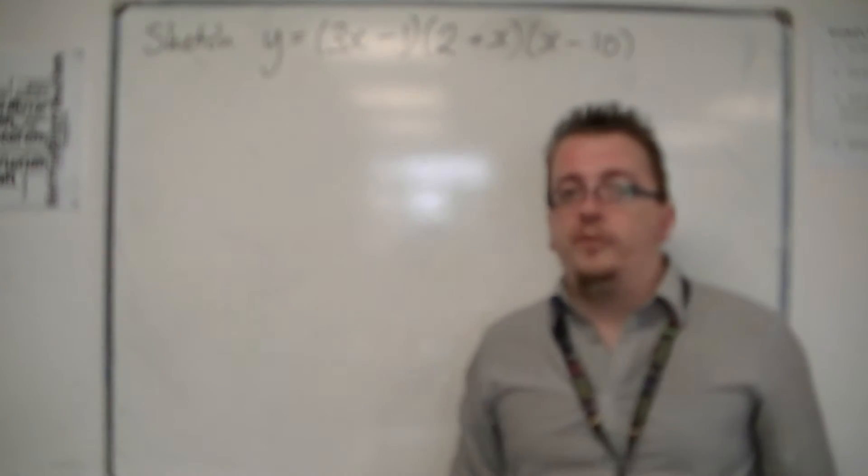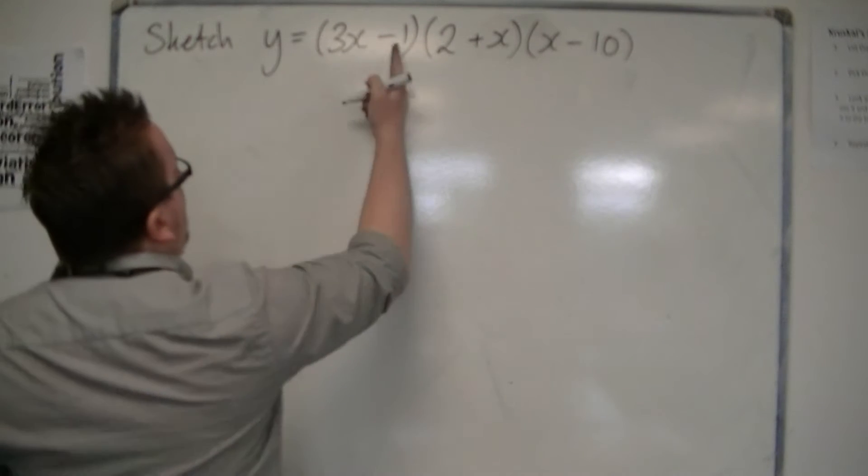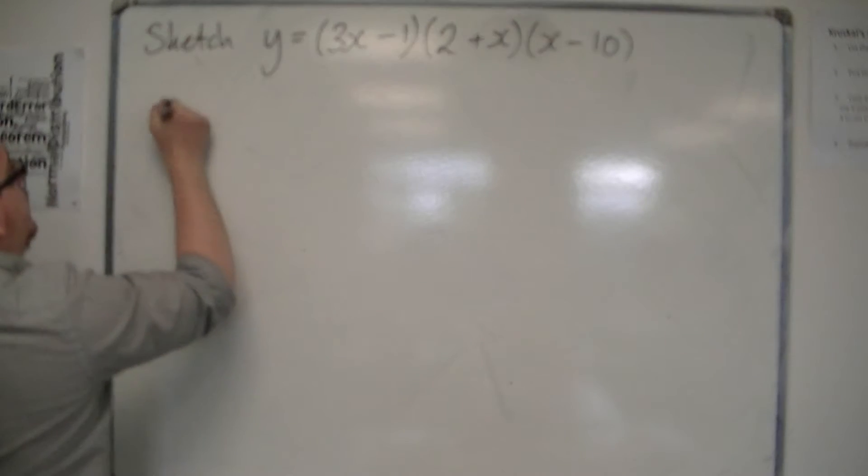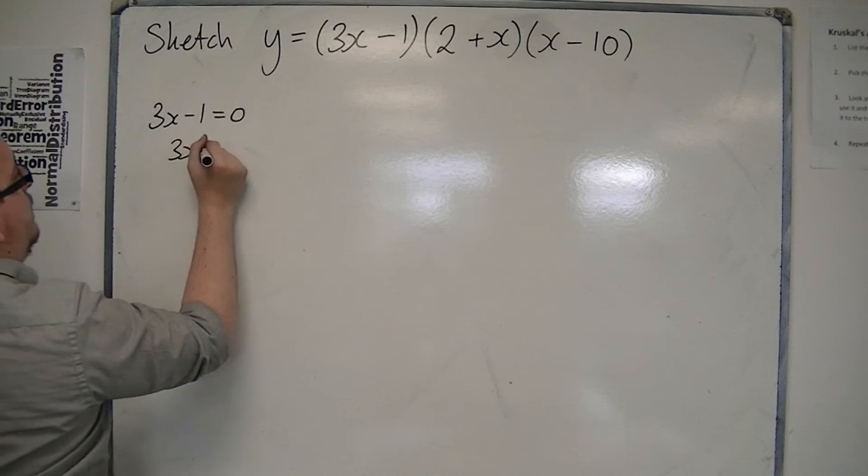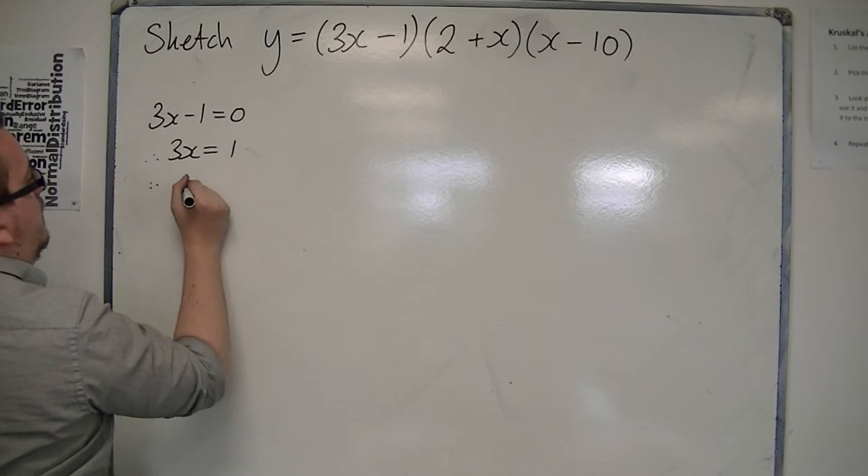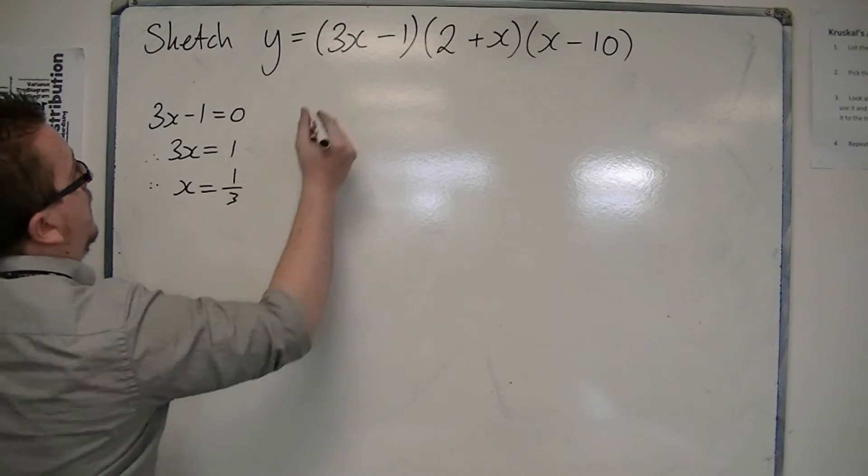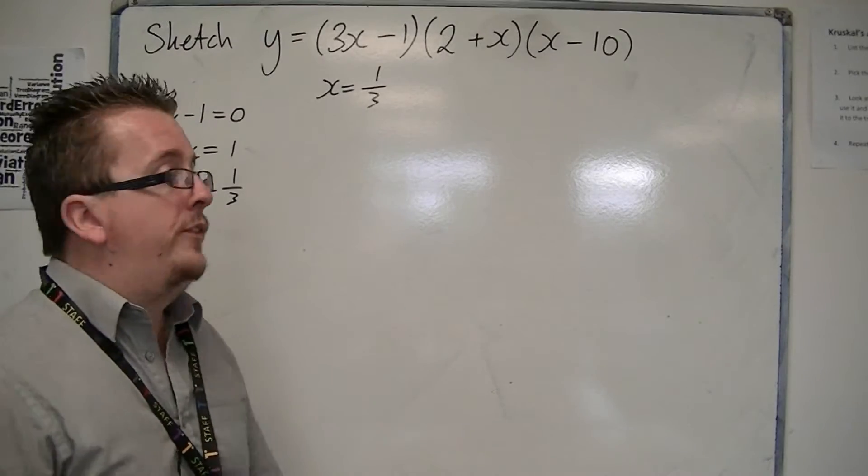So first of all, find out where the cubic must be crossing the x-axis. It must be crossing the x-axis when 3x minus 1 is 0. So 3x minus 1 is 0 means that 3x must be 1, so x would have to be 1 third. So x equals 1 third is a possible solution, so that's where it crosses the x-axis.